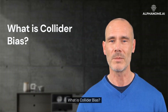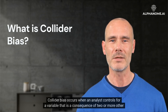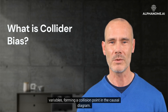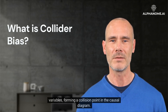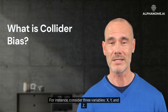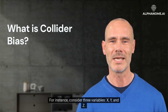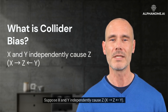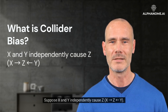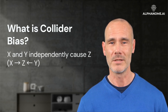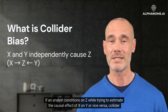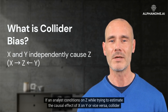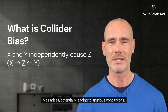Collider bias occurs when an analyst controls for a variable that is a consequence of two or more other variables, forming a collision point in the causal diagram. For instance, consider three variables x, y, and z. Suppose x and y independently cause z — x points to z and y points to z. Here, z is the collider. If an analyst conditions on z while trying to estimate the causal effect of x on y or vice versa, collider bias arises, potentially leading to spurious conclusions.